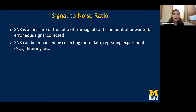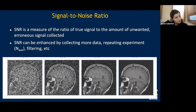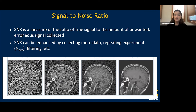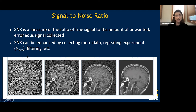Radiologists also care about signal-to-noise ratio. The signal is true signal arising from water molecules in the part of the body we're examining. Noise can come from many sources. A low-SNR image looks grainy and noisy. Getting the right contrast at high resolution with sufficient signal can take a lot of time.